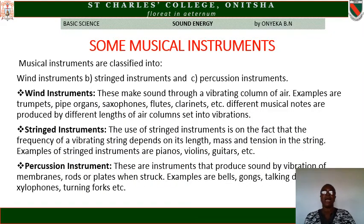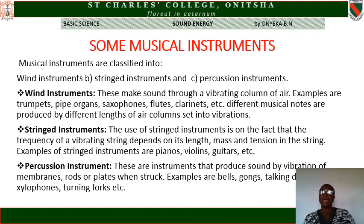Musical instruments are classified into three groups: wind instruments, string instruments, and percussion instruments. Wind instruments produce sound through a vibrating column of air. Examples include the trumpet, pipe organ, cellophane, flute, clarinet, and whistle — you blow before you can hear any sound from these instruments.